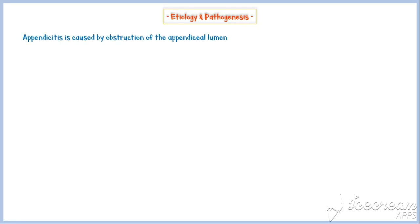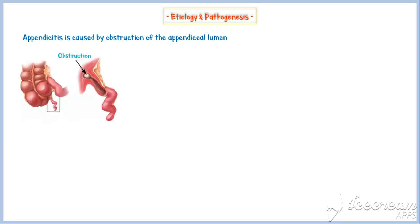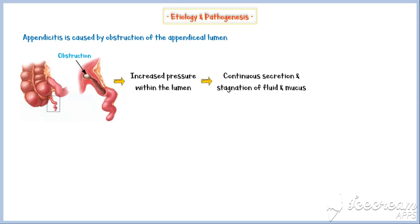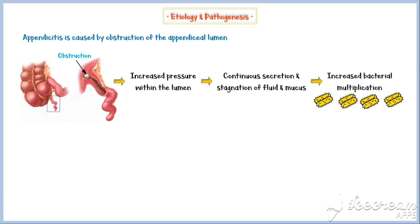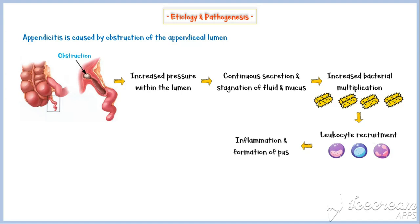Now let's discuss the etiology and pathogenesis of appendicitis. Appendicitis is caused by obstruction of the appendiceal lumen for a variety of reasons. Regardless of the cause, obstruction leads to increased pressure within the lumen, resulting in continuous secretion and stagnation of fluid and mucus. At the same time, intestinal bacteria within the appendix multiply, leading to recruitment of leukocytes to the site. This initiates an inflammatory reaction and formation of pus, leading to associated symptoms of appendicitis.